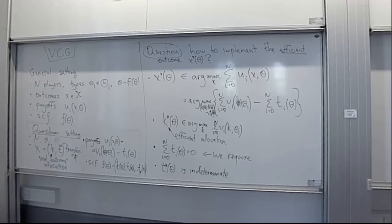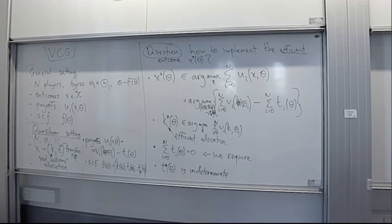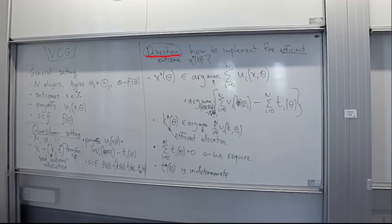We now have this quasi-linear setting which imposes a lot more structure than we had in the general setting. In general, the question is: can we implement any given social choice function f of theta? The answer would be pretty much the same — just look at the direct revelation mechanism. But let us now focus our attention on the efficient outcomes and ask how we can implement the efficient outcome x star of theta, or equivalently an efficient social choice function f star of theta.